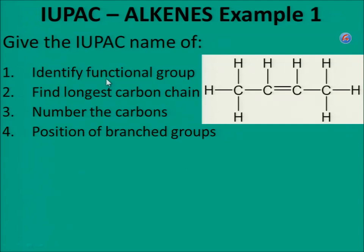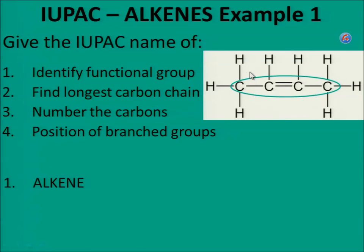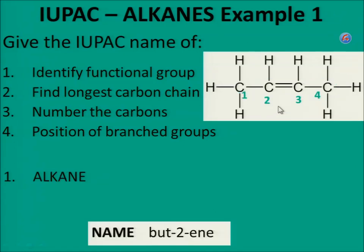Alkenes, example 1. The steps remain the same. Identify the functional group — there is a double bond, therefore this molecule is an alkene. Find the longest carbon chain and number the carbons. The longest chain with a double bond has 4 carbons — therefore 'bute'. The double bond is at carbon 2, so the name is but-2-ene. It is important to indicate where the double bond is.